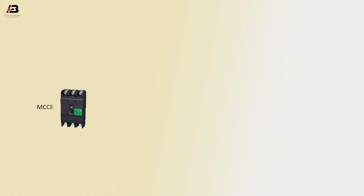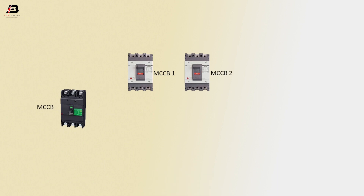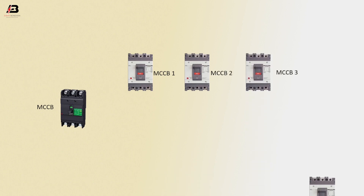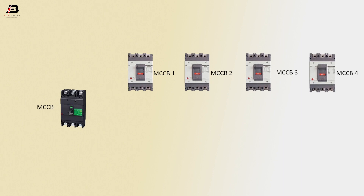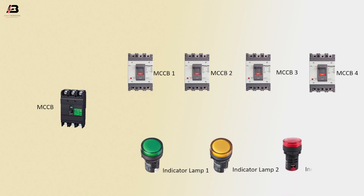So viewers, let's start. The components are: MCCB Circuit Breaker, MCCB 1, MCCB 2, MCCB 3, MCCB 4, Indicator Lamp 1, Indicator Lamp 2, and Indicator Lamp 3.